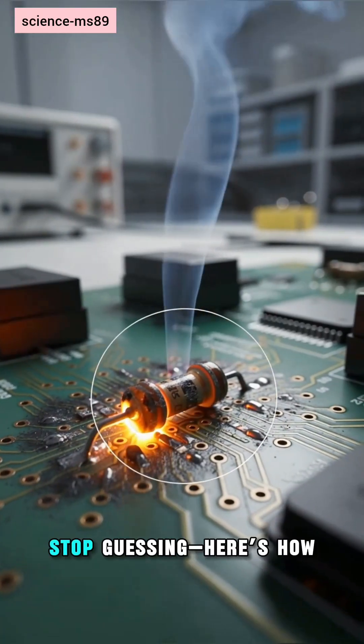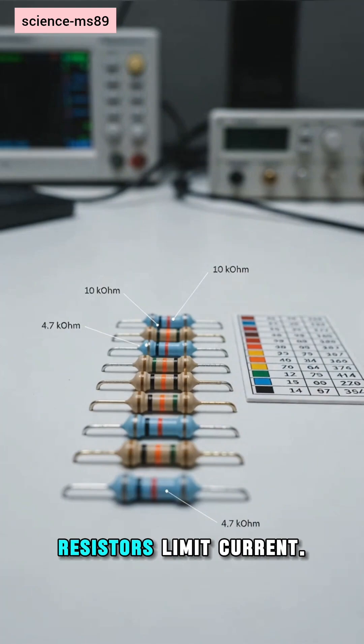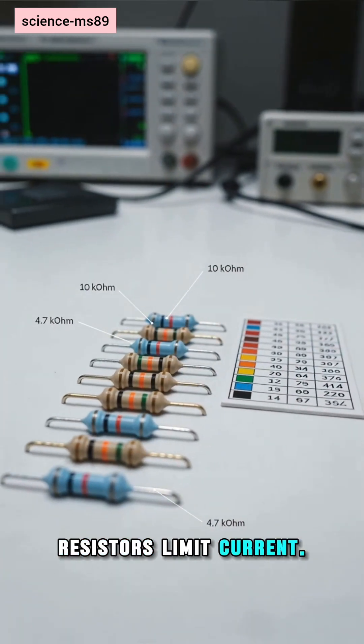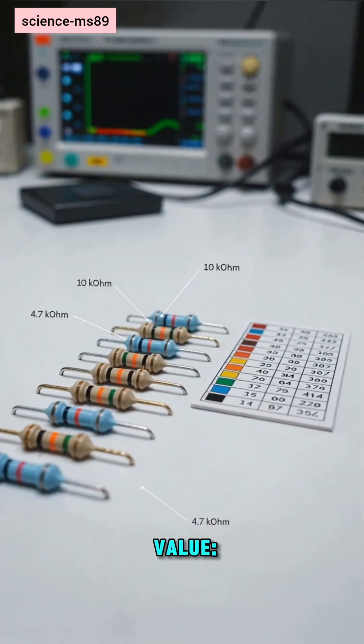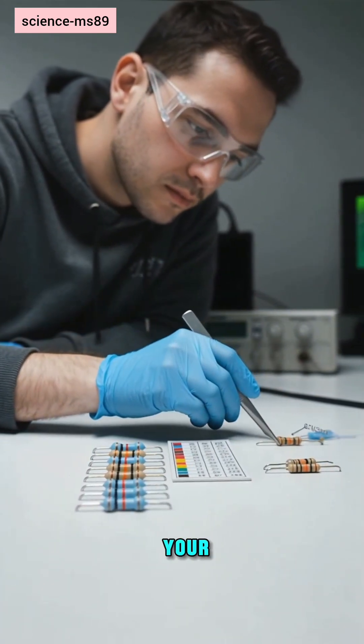Burnt bands you can't read? Stop guessing. Here's how to recover the value fast. Resistors limit current. Color bands encode value: first digits, multiplier, and tolerance. That's your roadmap.